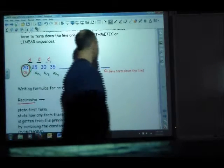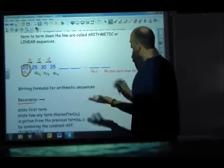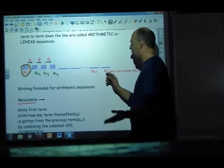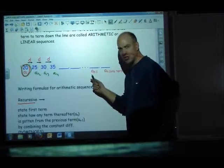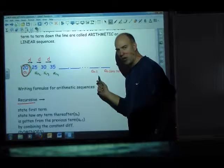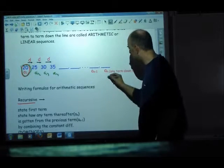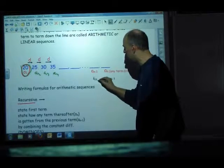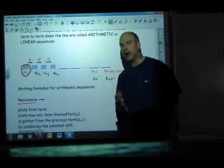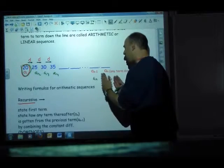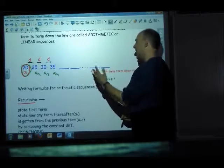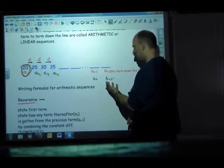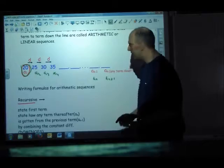So, if you say I've got some term down the line, call it aN, you are going to rely on the previous term, which we're going to indicate positionally as a sub n minus 1. Now, sometimes they'll call this one aN plus 1, and we'll be relying on aN. It doesn't matter. To get a term, you're using the previous term, whether you call this the 20th and the 19th, and you write it this way, or this way, it really doesn't matter.